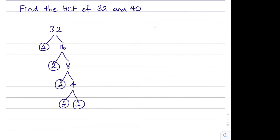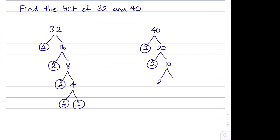We can do a similar thing with 40. That is 2 multiplied by 20. 20 is 2 multiplied by 10. And 10 we can split into 2 multiplied by 5. Both of these are prime factors.